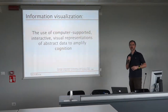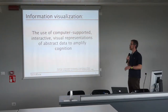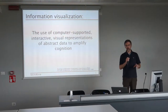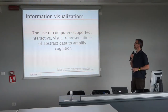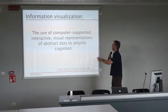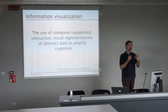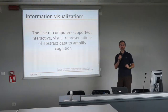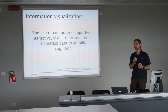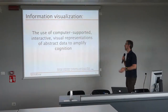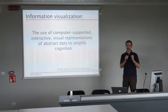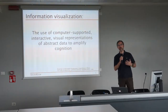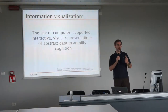Information visualization has several different definitions. One possible definition is the use of computer-supported interactive visual representation of abstract data to amplify cognition. The key elements here are the visual representation aspect, which is part of the definition of visualization. The data is typically the source that you want to show — the result of your research, for instance — and eventually the cognition part, which concerns the ability to extract useful information and get better knowledge of the data you want to show.